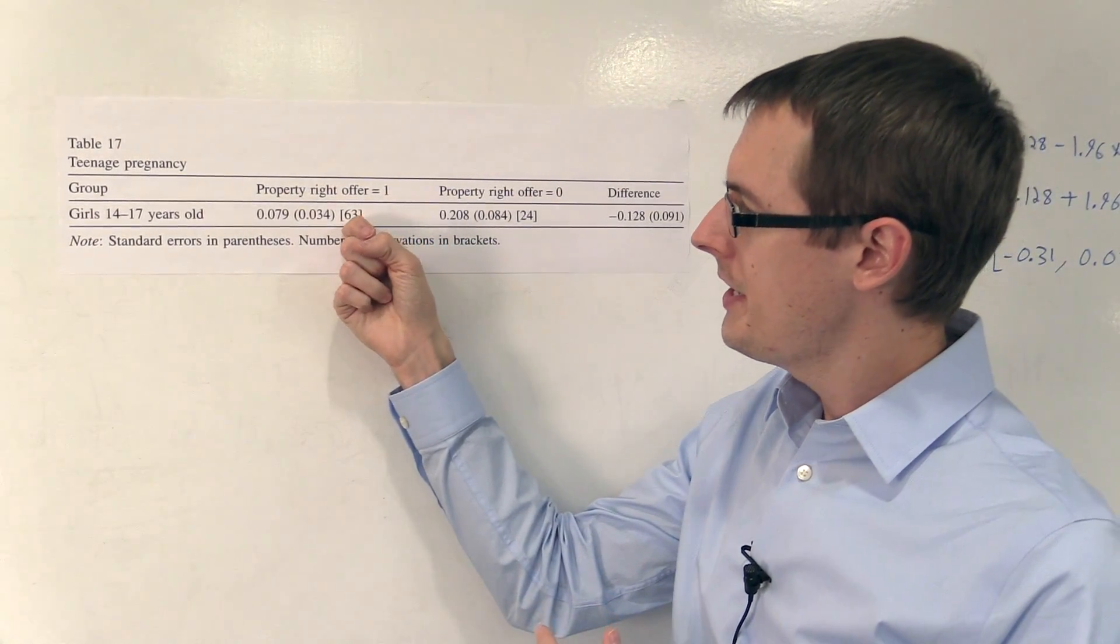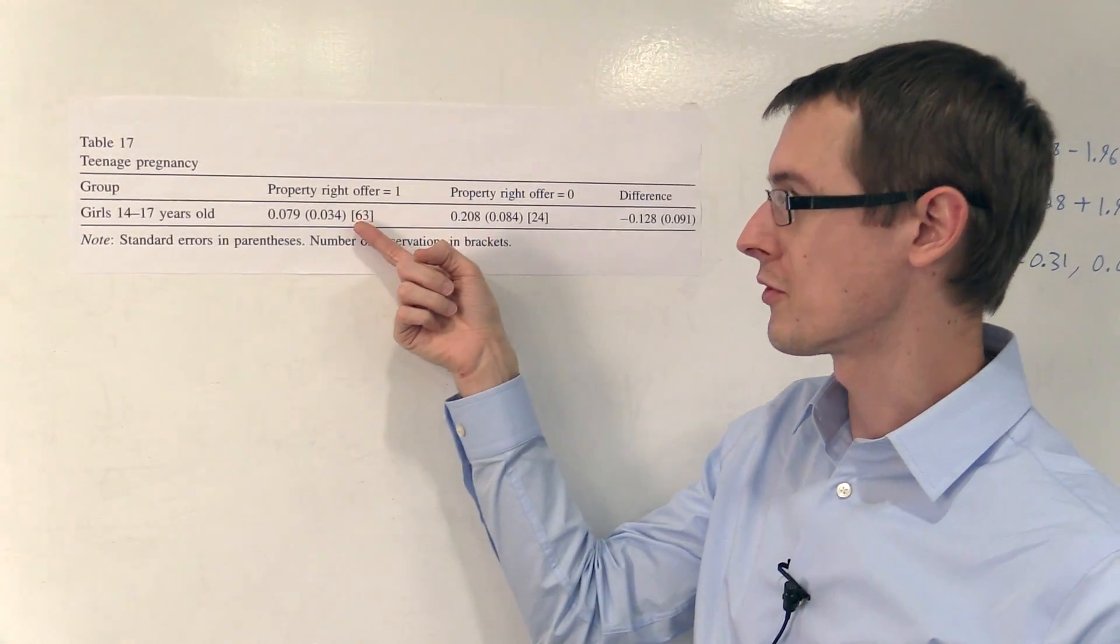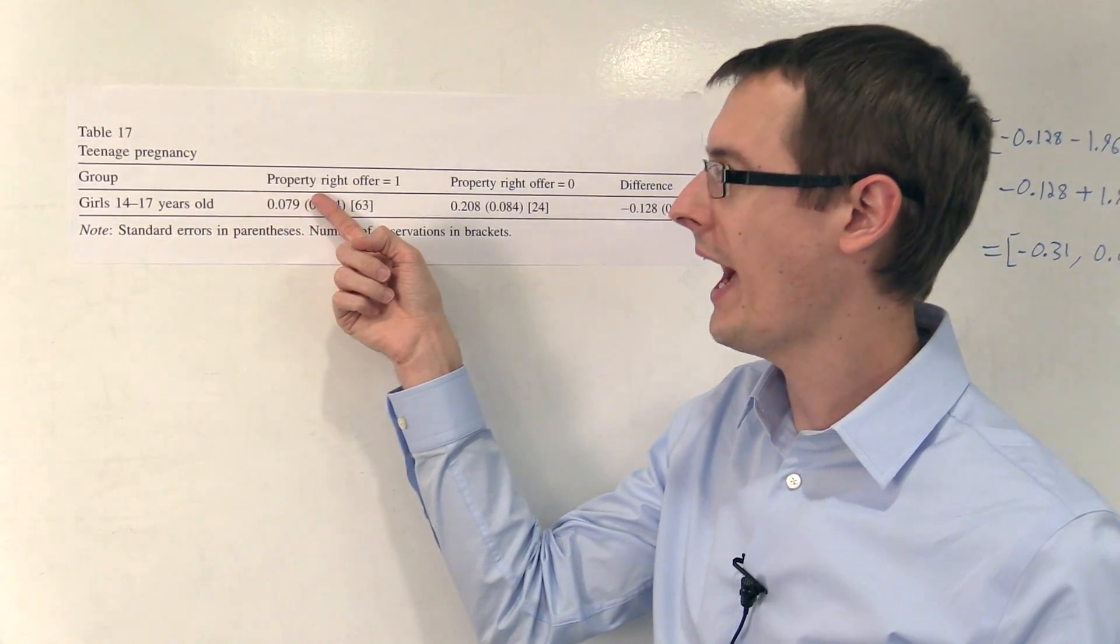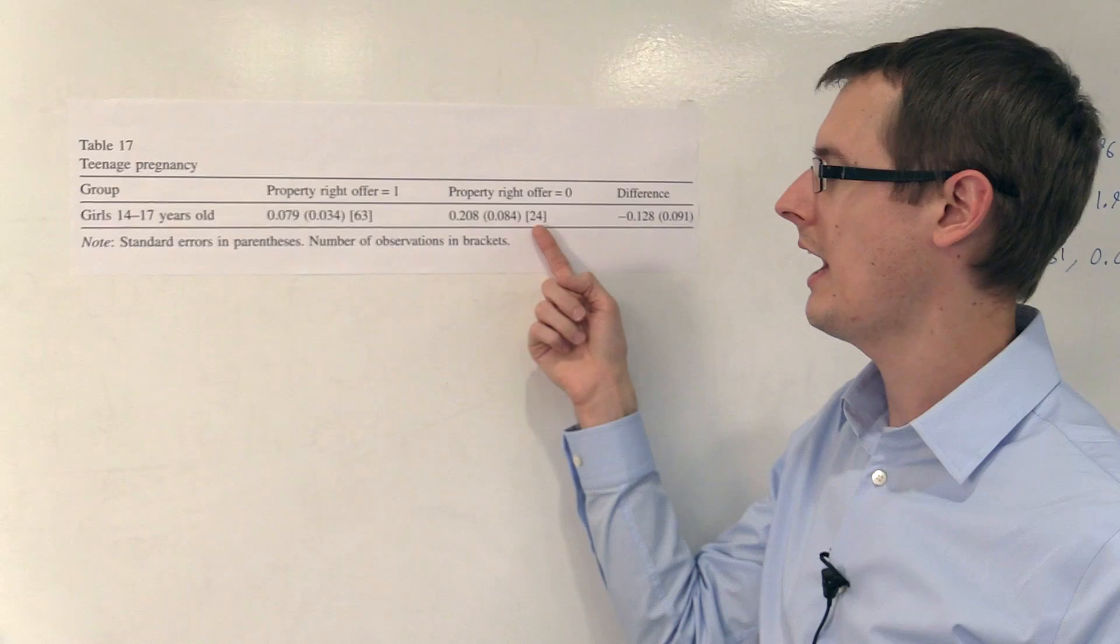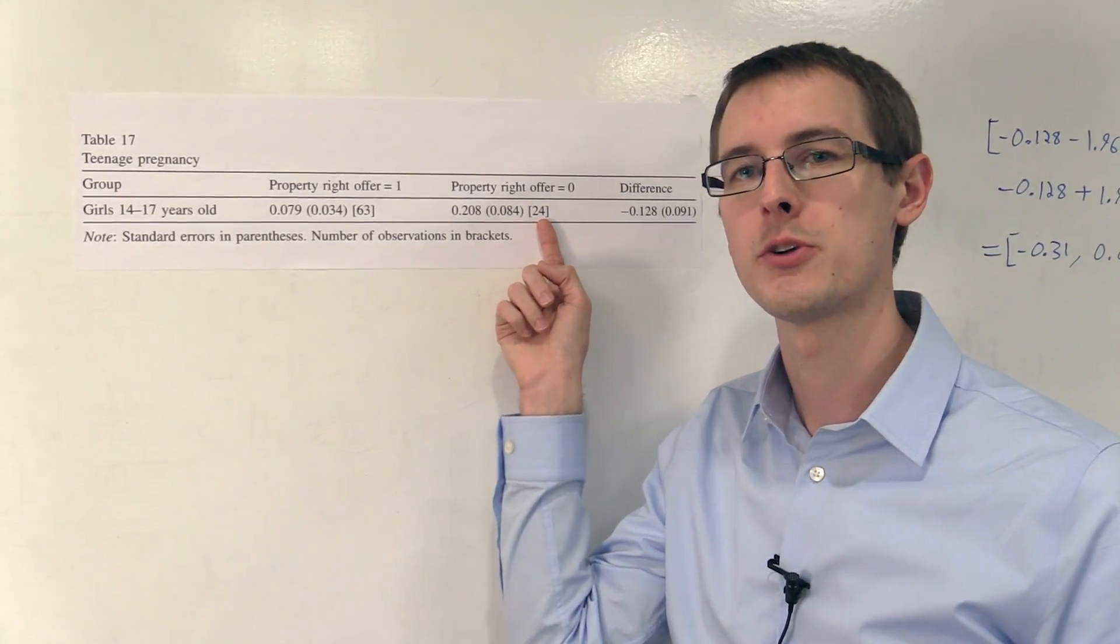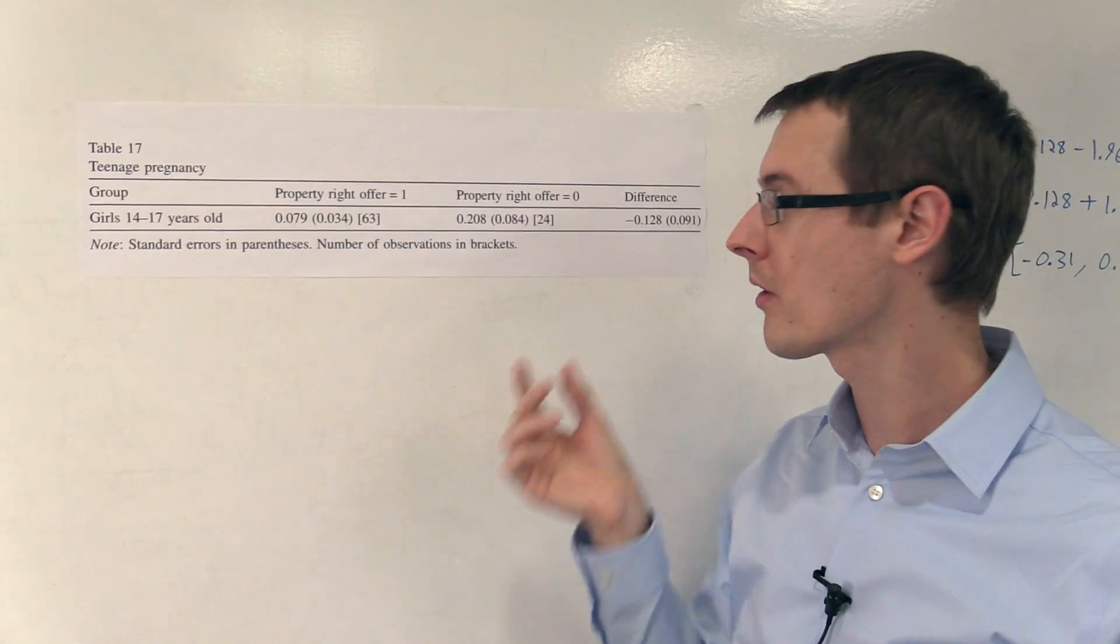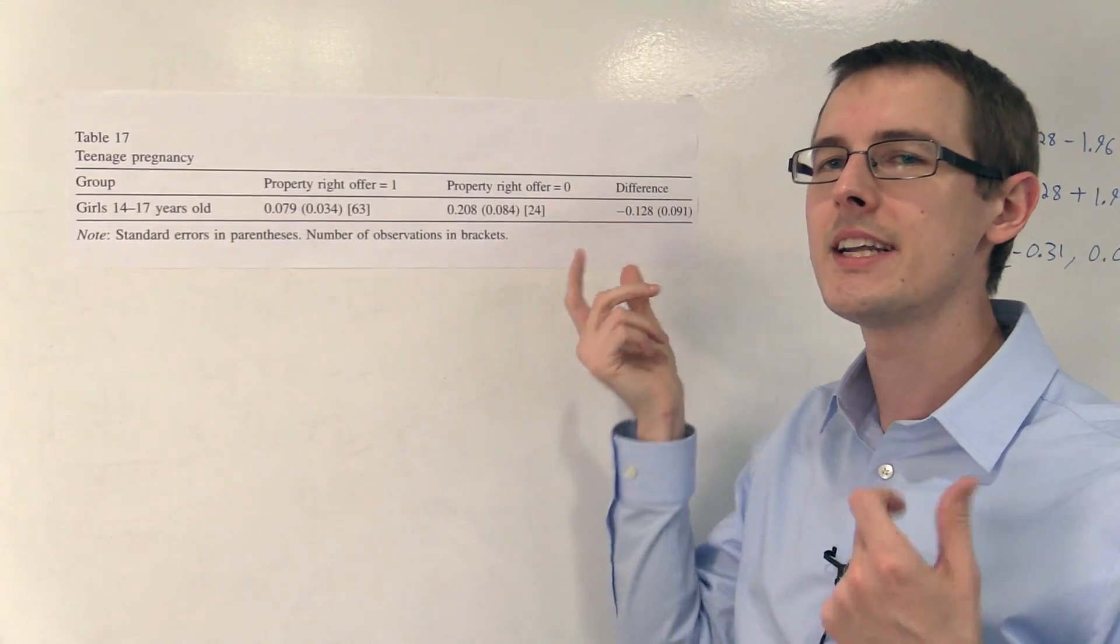Now, in here, in these brackets, we see the number of observations in each group. For the households who had the option of getting property rights, there were only 63 girls. For the households who did not have the option of getting property rights, there were 24. So those numbers are pretty small. So that's why we might be worried that this number here is just statistical noise and it's not an actual effect.